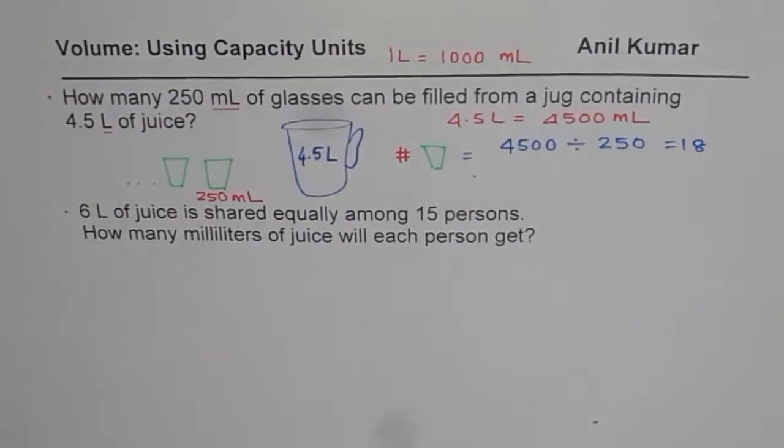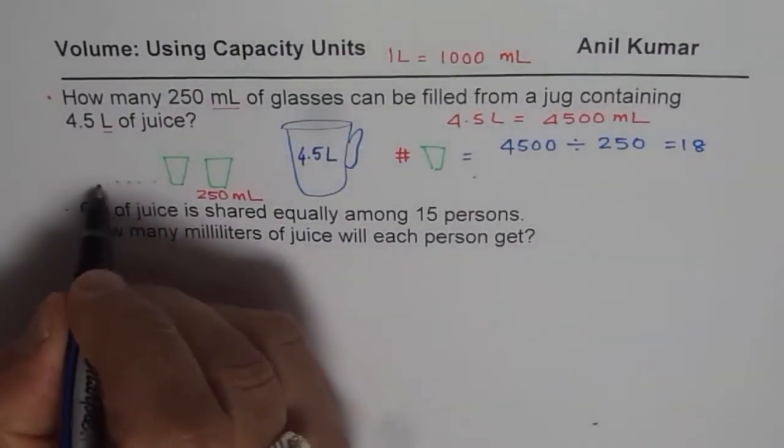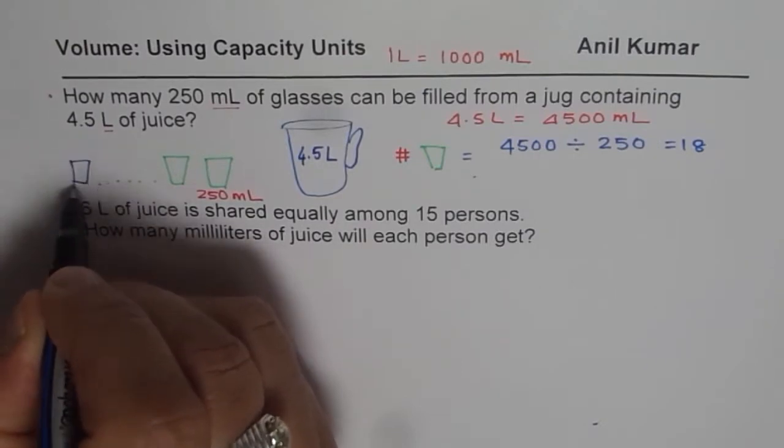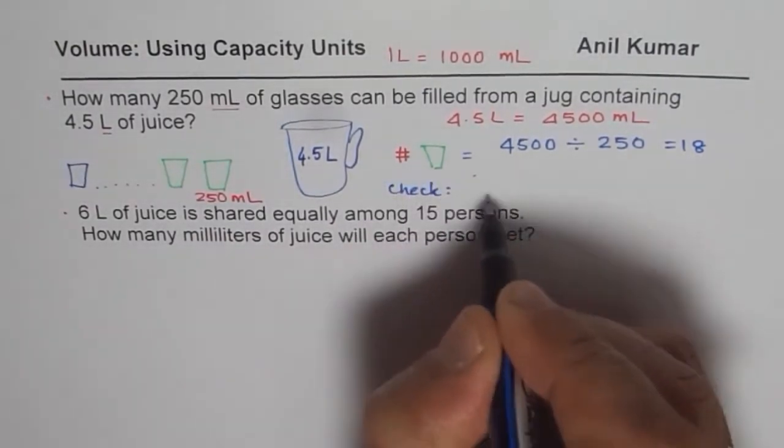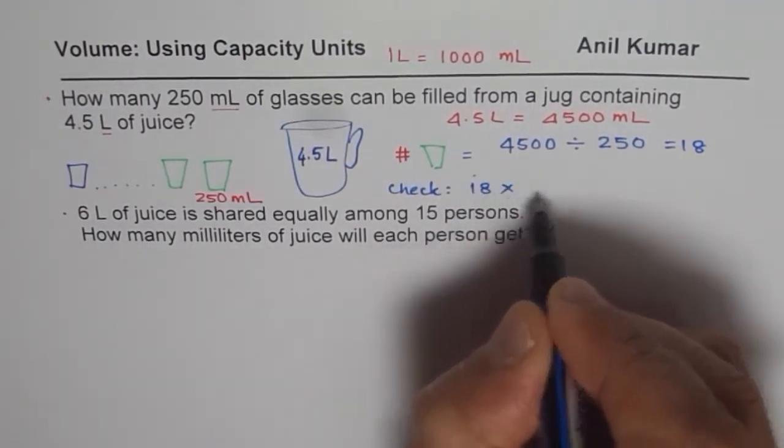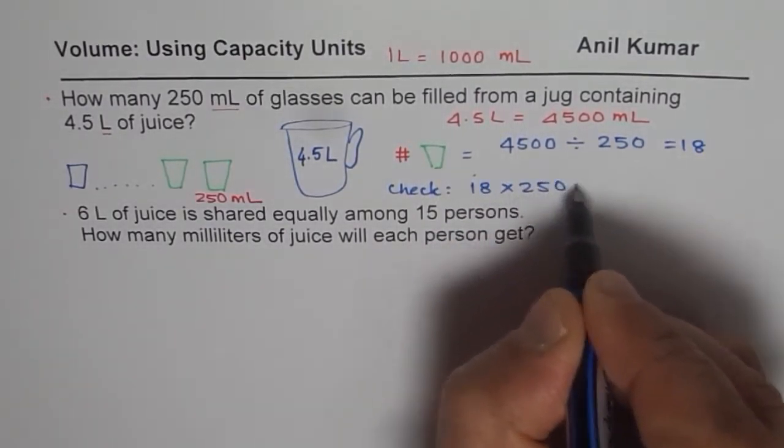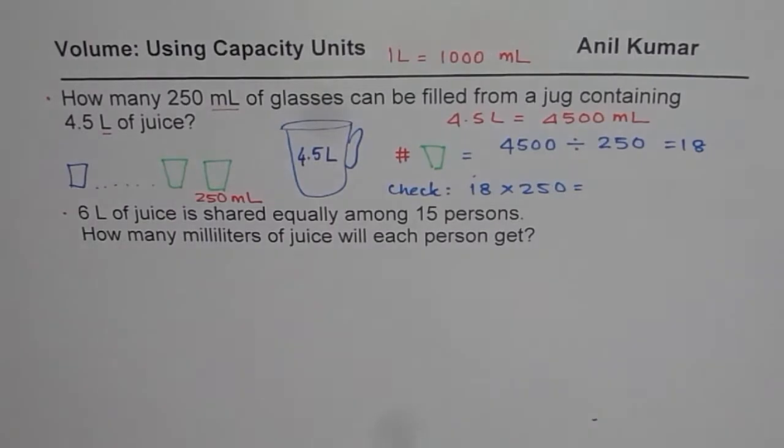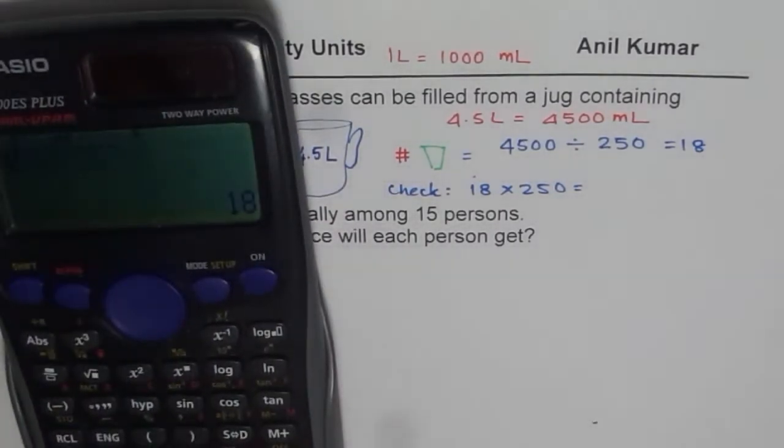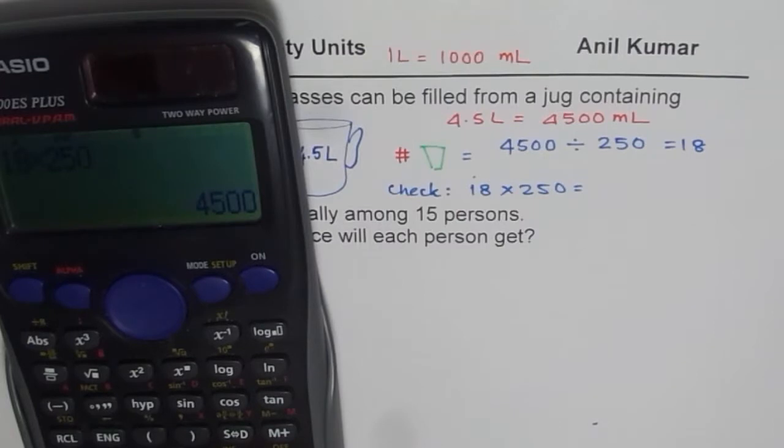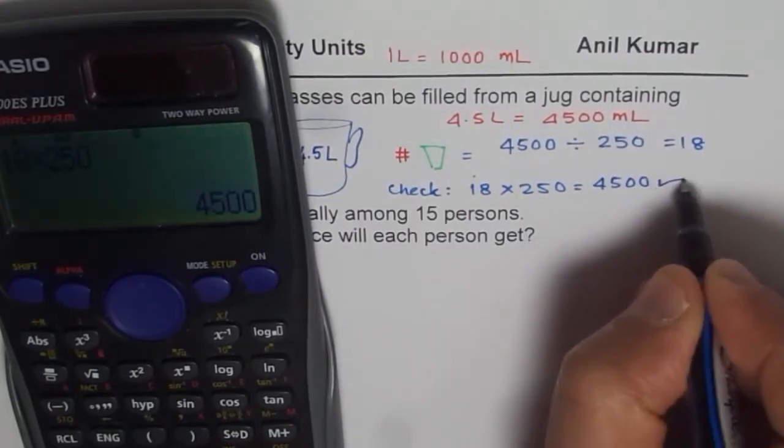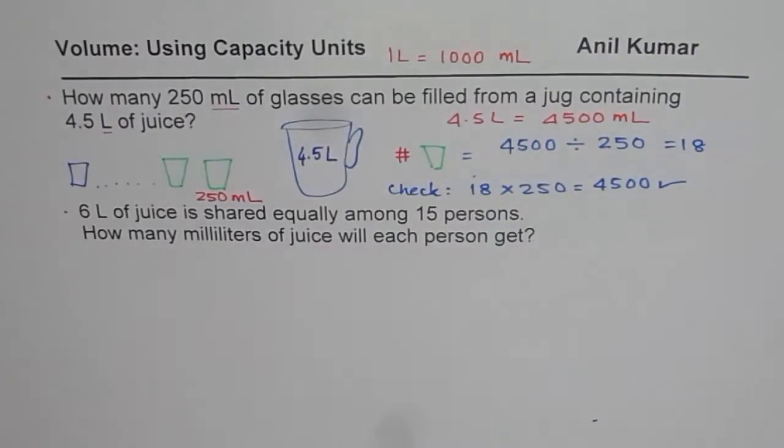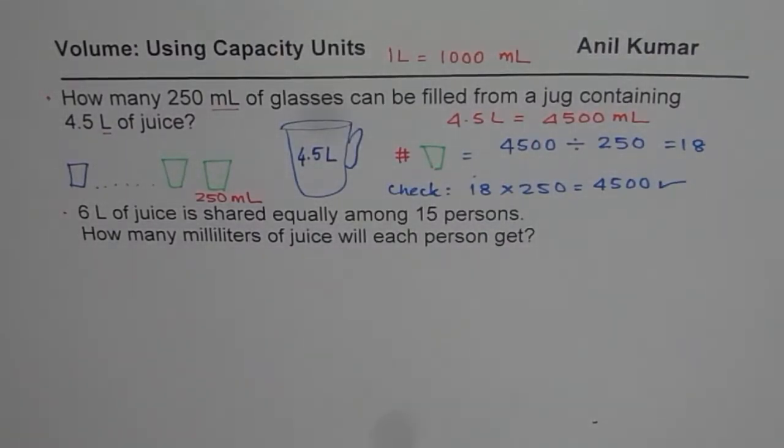So we can fill in 18 glasses. You can also check your answer. How to check your answer? You do 18 times 250. And see what you get. Do you get 4,500? Let us do it. 18 times 250 equals to 4,500. So that is the kind of check. So it is important to check your answer also sometimes. That helps and ensures that you got the right answer.